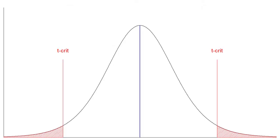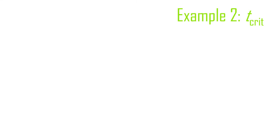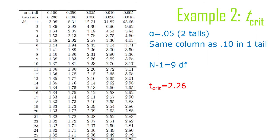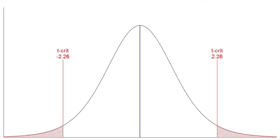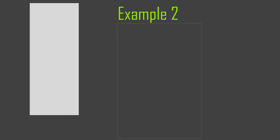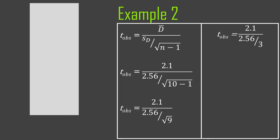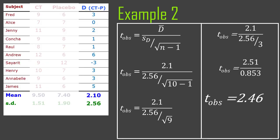Here's our diagram — we're going to have two t-critical values. This is the distribution of all possible difference scores. Finding our critical t-value: alpha is 0.05 in two tails, the same column as 0.10 in one tail. We have 10 subjects, 10 differences, therefore 9 degrees of freedom, and that gives us a t-critical of 2.26. So now we can label that in the diagram. Working through the formula and plugging things in, you should get something like a t observed of 2.46.